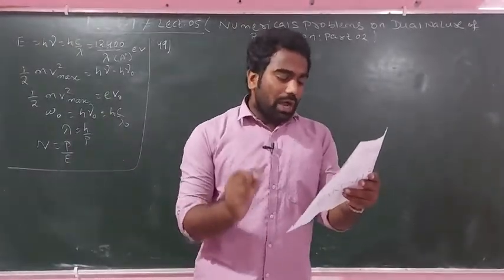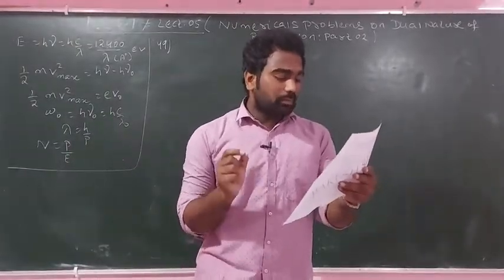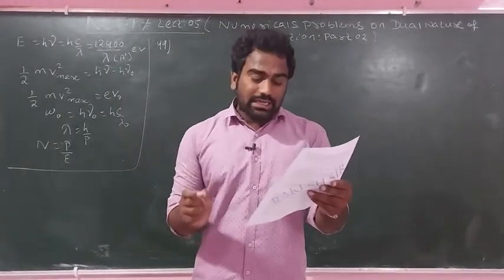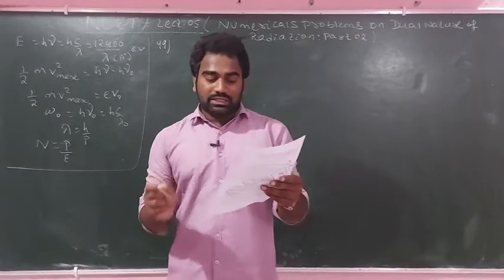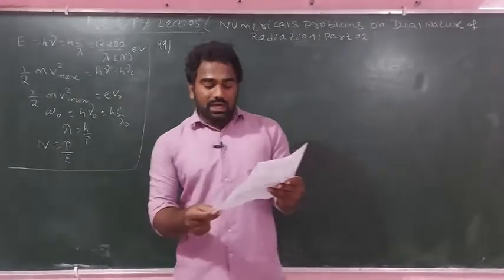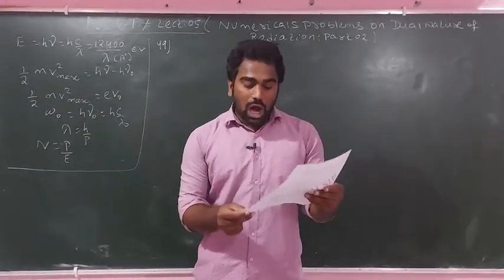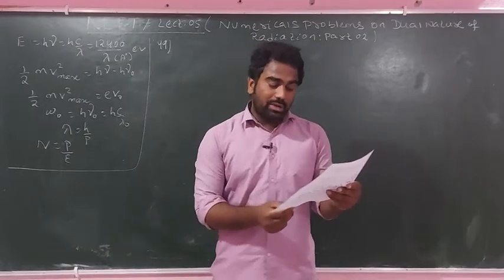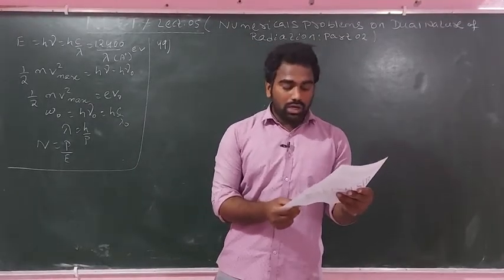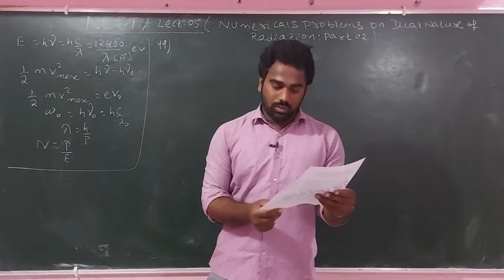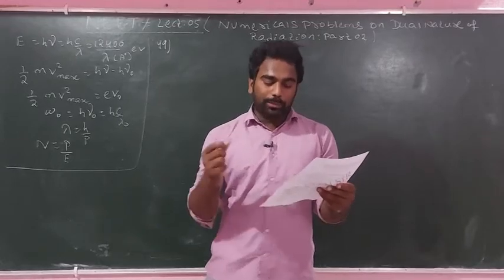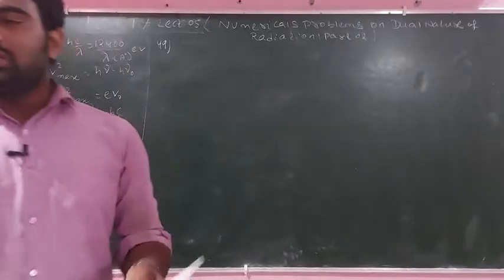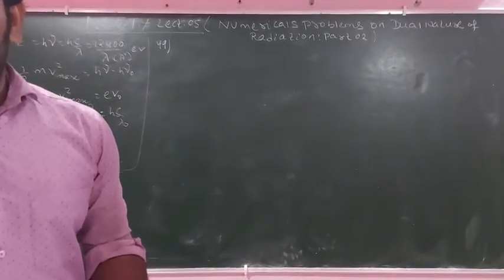Question number 49: If 5% of the energy supplied to an incandescent light bulb is radiated as visible light, how many visible light photons are emitted by a 100-watt bulb? Assume wavelength of visible photons to be 5600 angstrom.